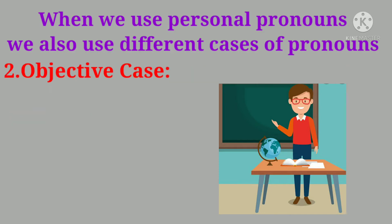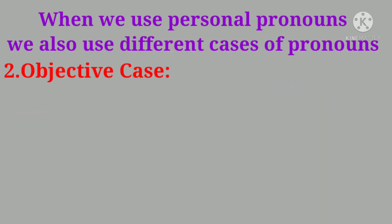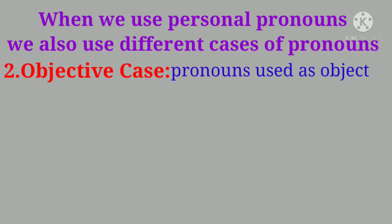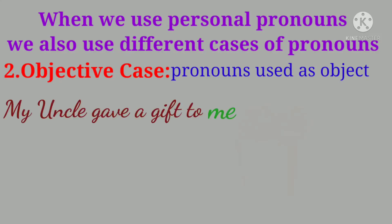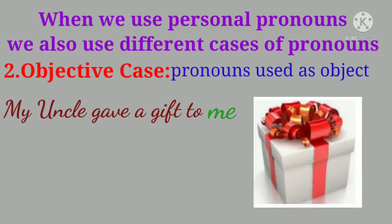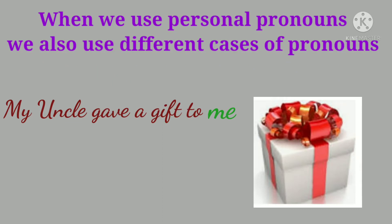Next is objective case — pronouns used as objects. The pronoun that is used in the role of an object is called objective case. For example: 'My uncle gave a gift to me.' Here 'me' is used as an object.